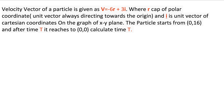The problem: the velocity vector of a particle is given as v = -6r̂ + 3î, where r is a polar coordinate and the velocity is always directed towards the origin, and î is a unit vector towards the x-axis. The particle starts from point (0, 16) and reaches (0, 0). We need to calculate the time it takes to reach there.